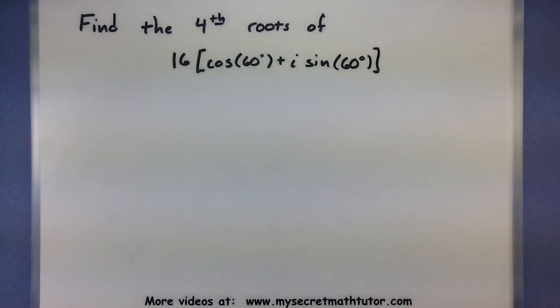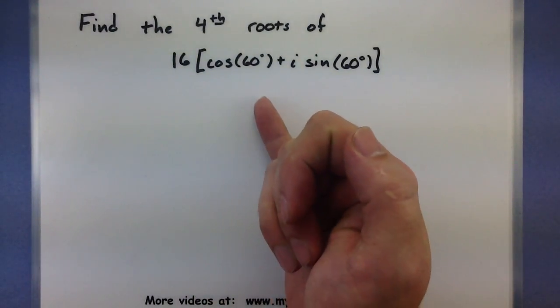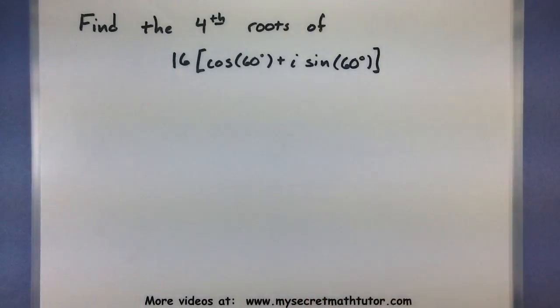I want to find the fourth roots of 16 cosine of 60 degrees plus i sine of 60 degrees. Let's run down my little steps here, and do it one at a time.